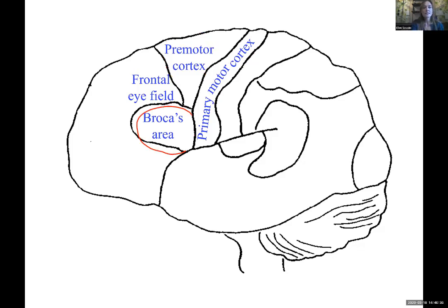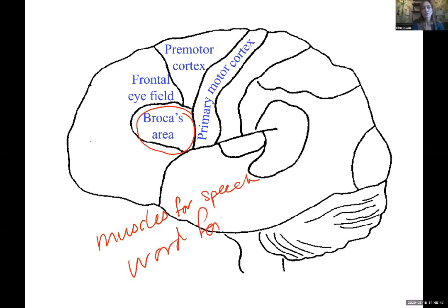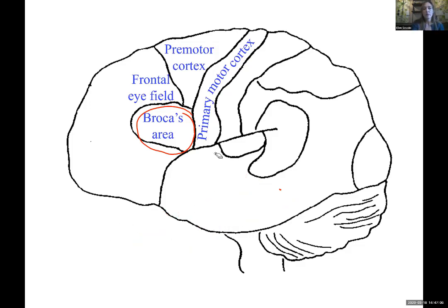Broca's area is specific to the muscles used in speech - you can also say word formation. It's still motor in nature, very specifically targeting muscles within your larynx, changing pitch of your vocal cords, your mouth, and your tongue. And then the frontal eye field is just muscles controlling your eyeballs - where are we looking, up, down, and around.